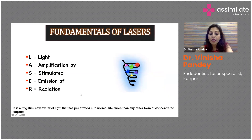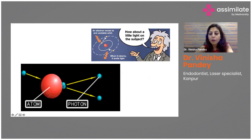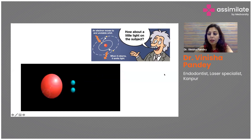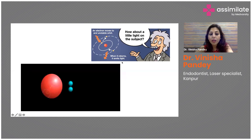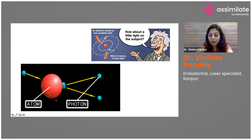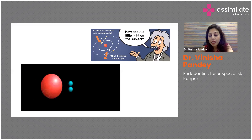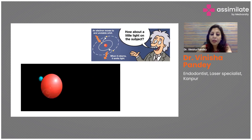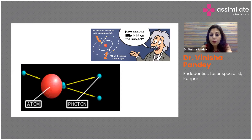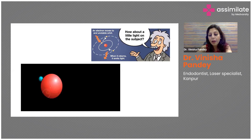The fundamentals of lasers lie in the acronym LASER: Light Amplification by Stimulated Emission of Radiation. It is a mighty new form of light which has penetrated normal light more than any other form of concentrated energy. As seen in the video, the Bohr atom has energy levels E0, E1, and E2, and when electrons jump between energy levels they release photons. Photons can be doubled due to stimulated emission and increased further after spontaneous emission. Stimulated and spontaneous emission form the backbone of the laser device.